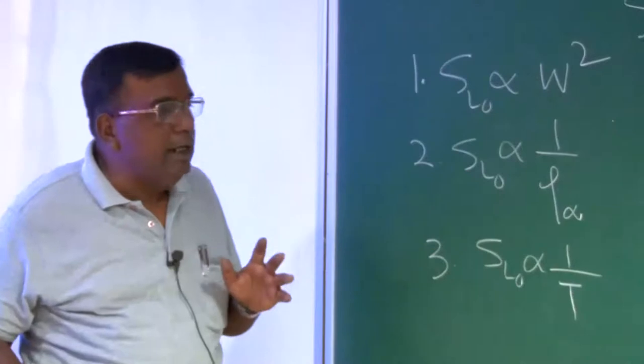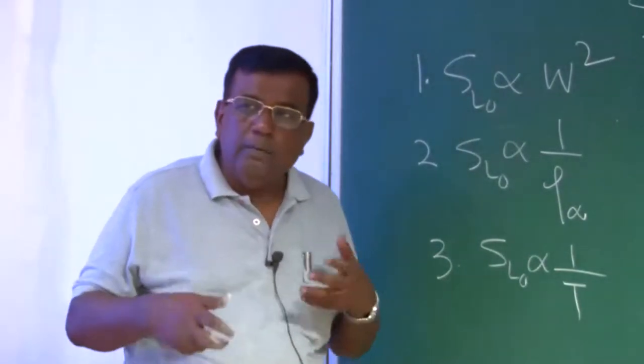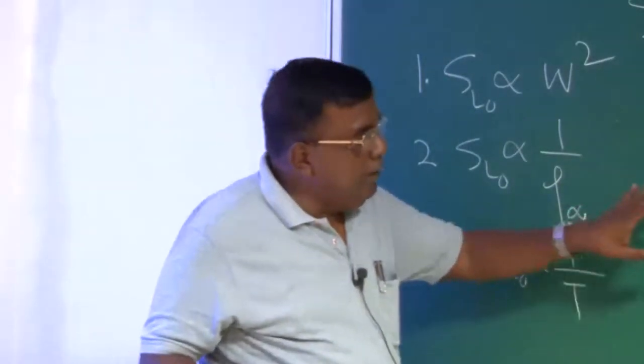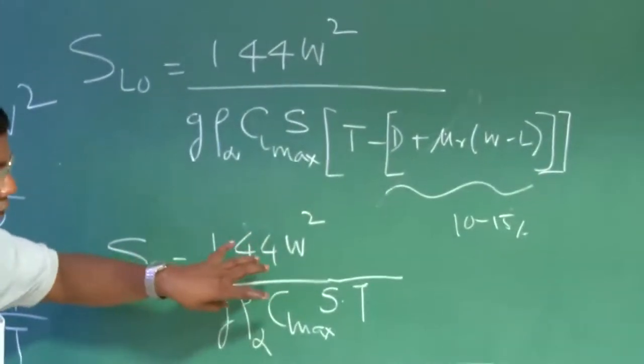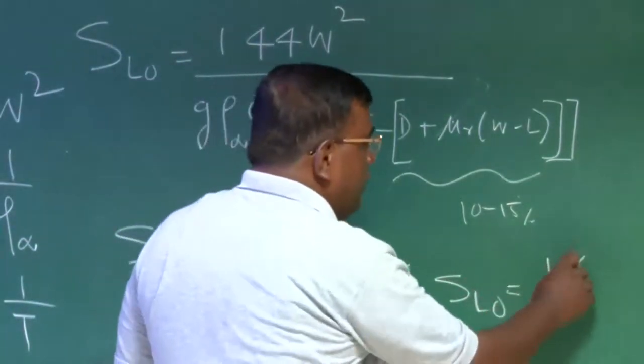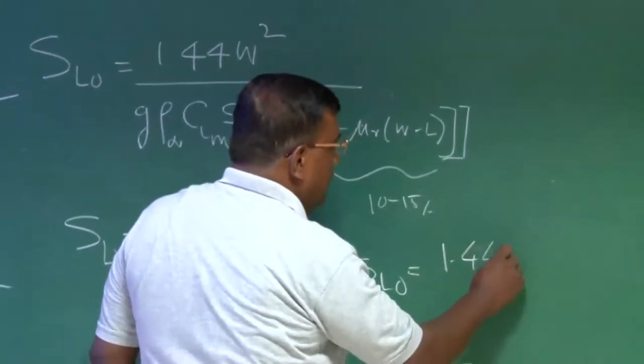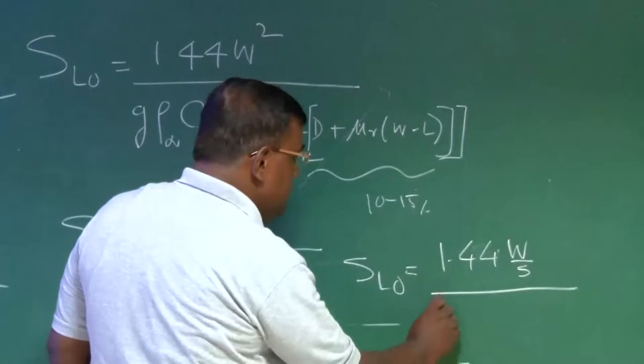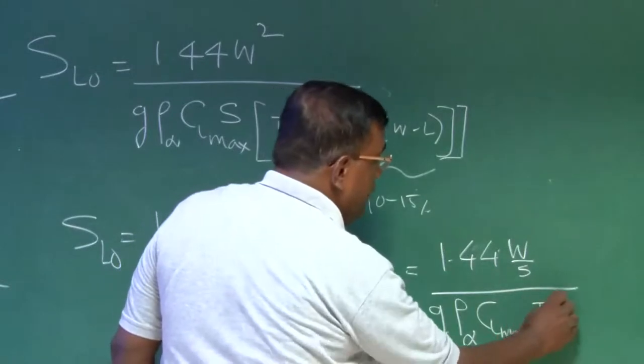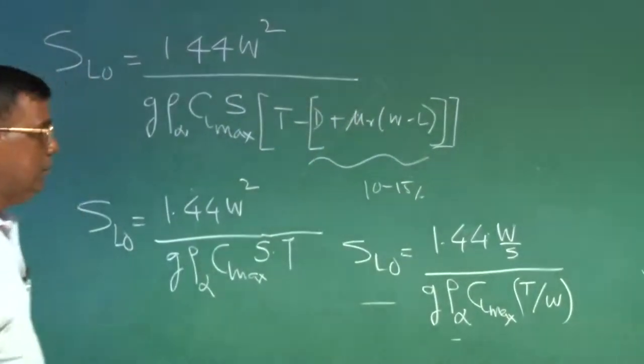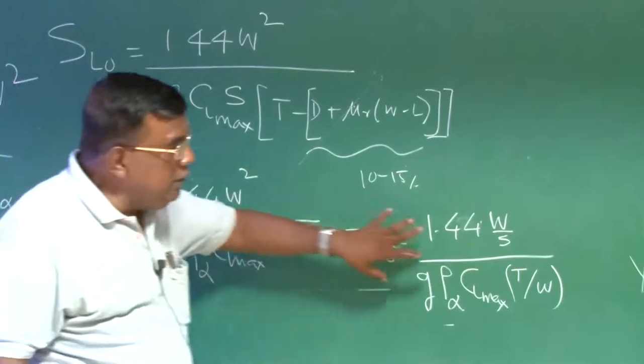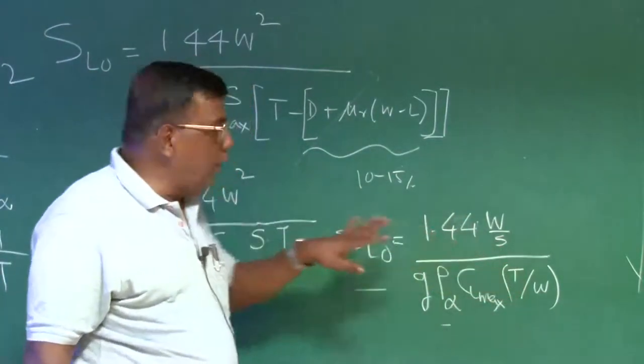But unfortunately a designer will primarily think in terms of wing loading and thrust loading. That is W by S and T by W. So now how a designer will look or extract juice out of this expression through wing loading and thrust loading? I can write S lift off equal to 1.44 W by S divided by G rho infinity CL max T by W. So they are equivalent expression. Now designer is more comfortable with this sort of an expression.